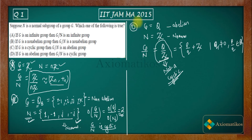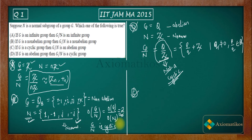So finally, what we have shown is that options A, B, and D are all incorrect, so C must be the correct option. Option C says that if G is a cyclic group, then G by N is an abelian group. Let us now prove this option, which will be informative for you.